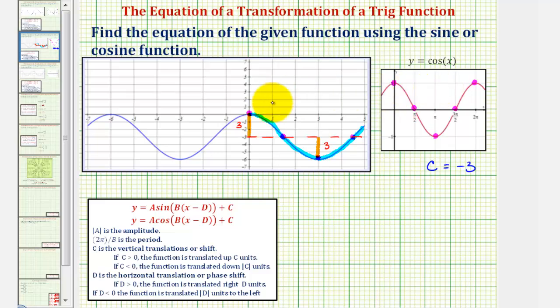If there was a reflection across the midline, A would be negative three. But in our case, A equals positive three. And again, because this maximum function value starts at the y-axis, or x equals zero, just like the basic cosine function, there is no horizontal shift, and therefore, D equals zero.